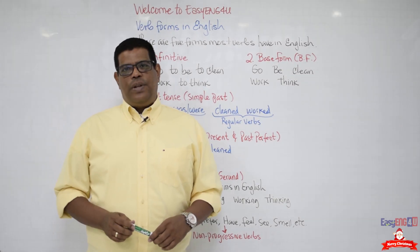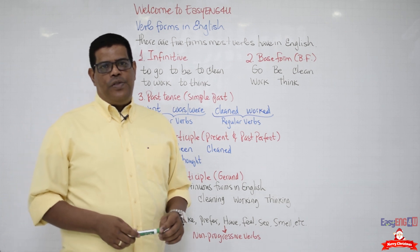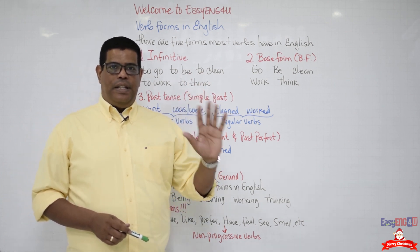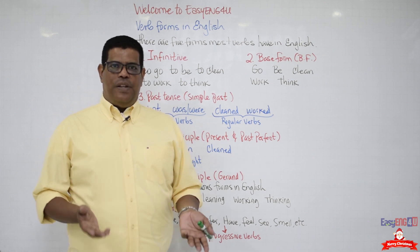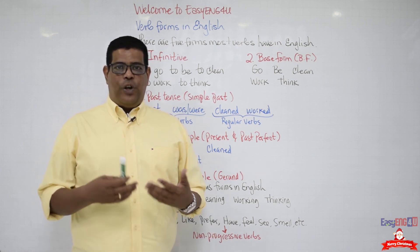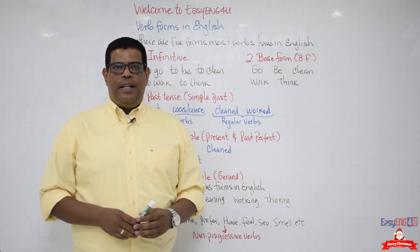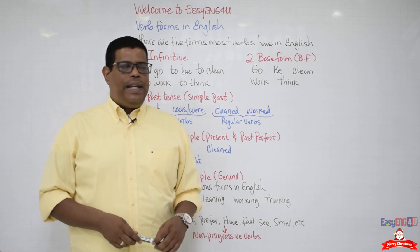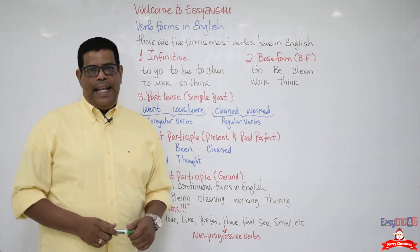In today's video we're going to learn verb forms in English. There are five different forms, but this lesson has two different parts. In the first part we're going to study verb forms, and in the second part we're going to study verb combination. So let's begin with verb forms in English.